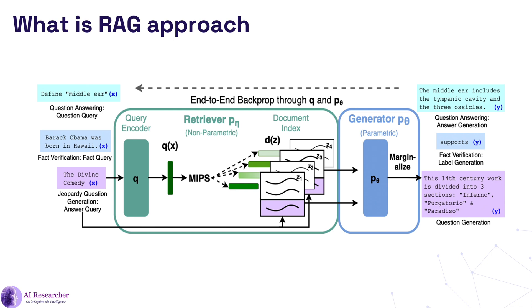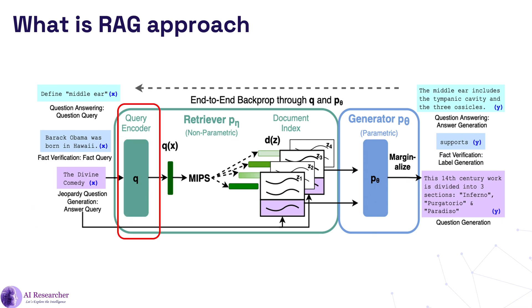So what is the RAG approach? The RAG approach enhances the question answering system by integrating a retrieval mechanism — like a document retrieval mechanism — directly into a generative model or large language model, allowing the system to pull in external documents that provide relevant context for generating answers. In this architecture, we have three types of queries: a question query, fact query, and answer query — for example, 'define middle ear', 'Barack Obama was born in Hawaii', and 'The Divine Comedy'. The first component is the question encoder, which encodes the input query into a dense vector representation denoted as q(x), and this vector is used to search a document index to find the most relevant documents.